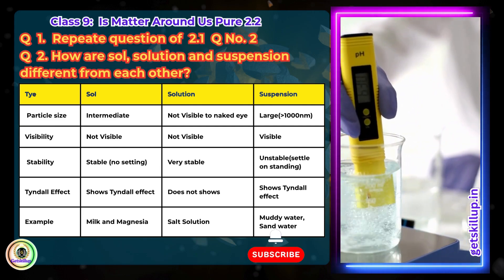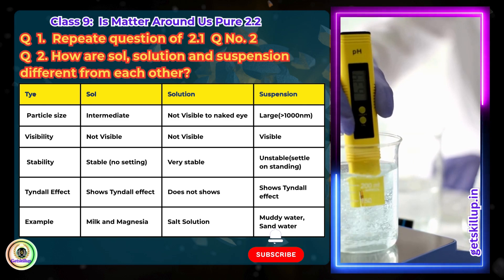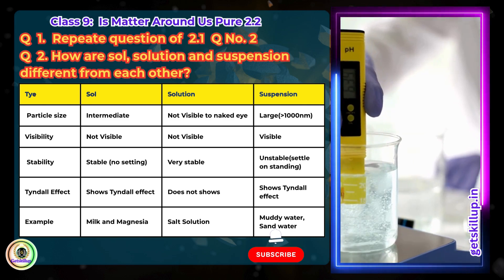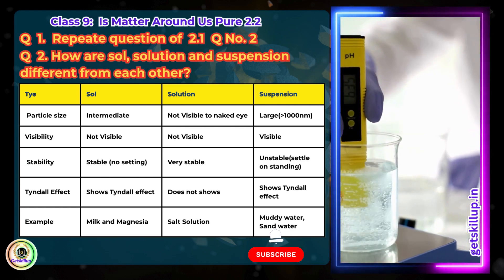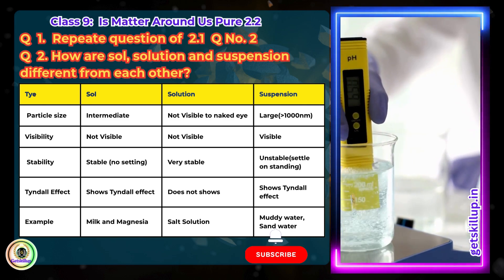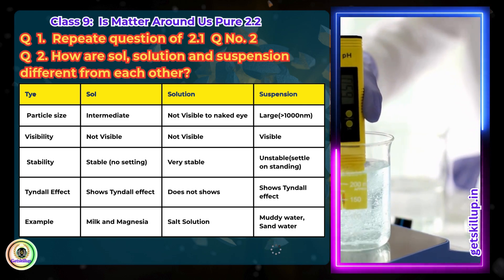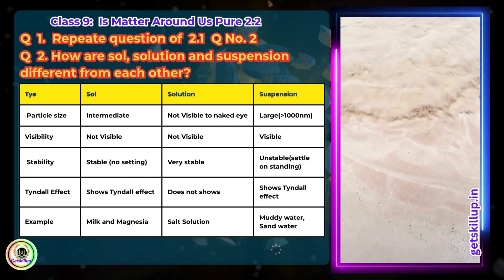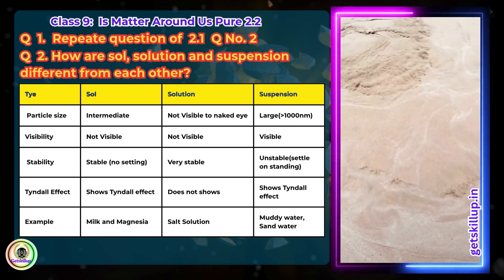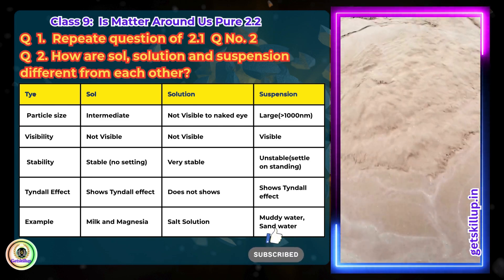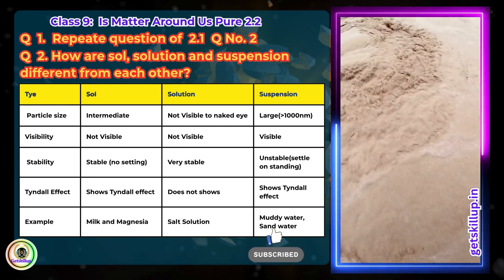Suspension — particle size: large; visibility: visible; stability: unstable; Tyndall effect: shows Tyndall effect. e.g. muddy water and sand in water.